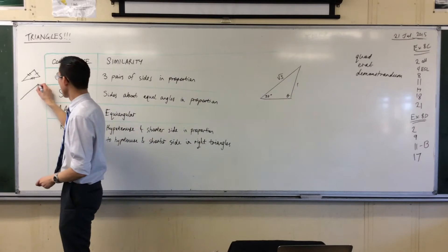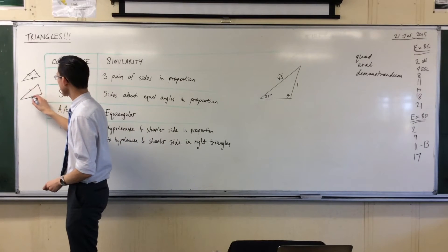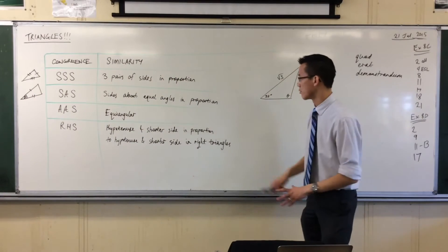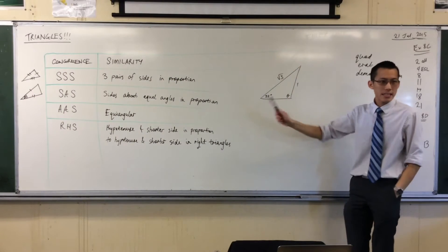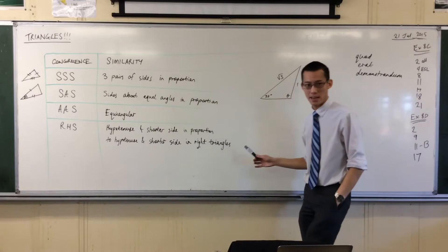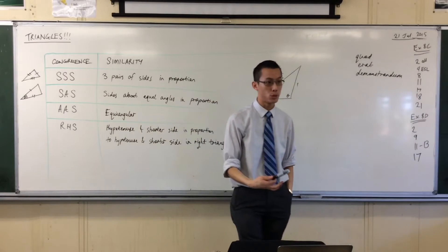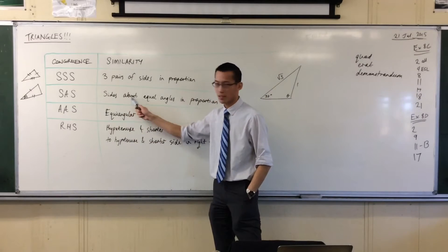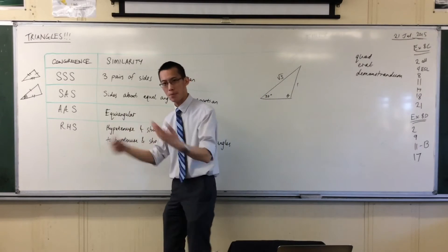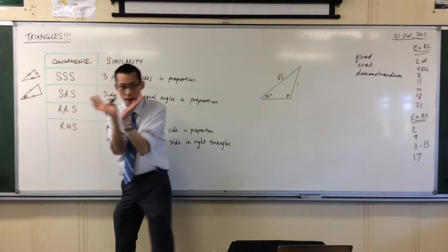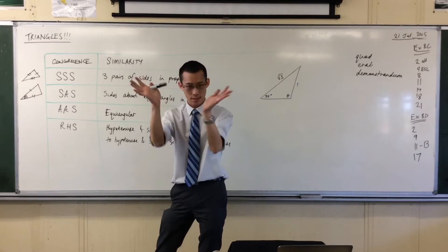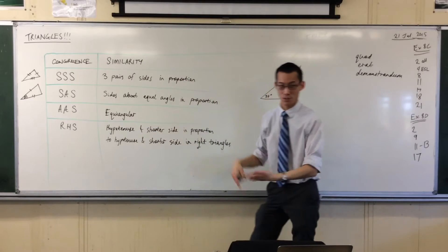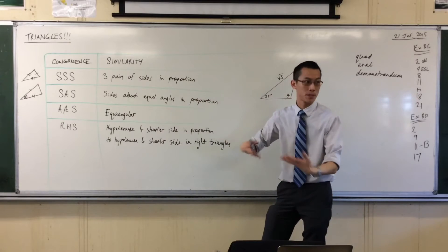SAS means you're going to get two sides and the included angle. Now, this is the shortest way I've ever encountered of saying it. Sides, so it says plural, so you're going to get more pairs of sides than just the one, about, which is meant to be sort of the opposite of included. An angle can be included by two sides and the sides can be about the angle. So that is a technical word, not just about, it means the opposite of included.